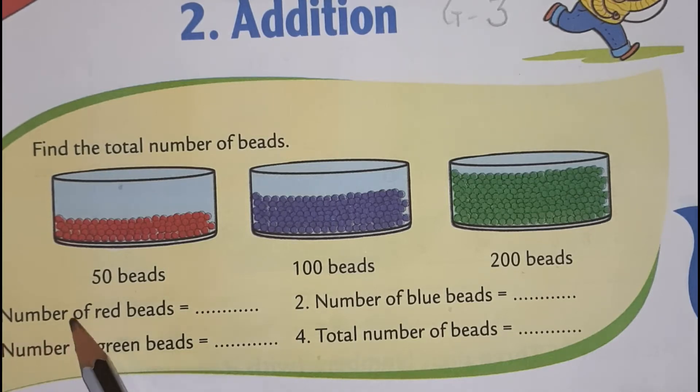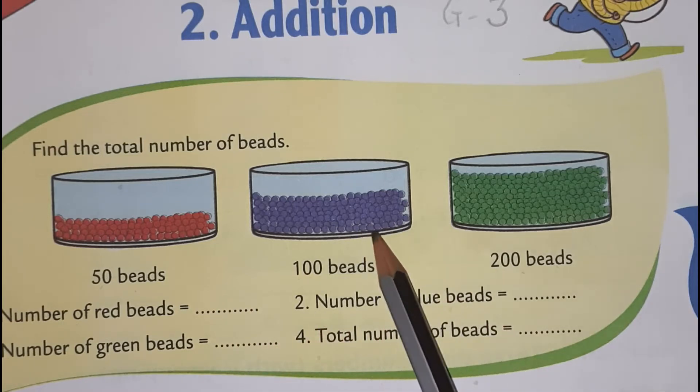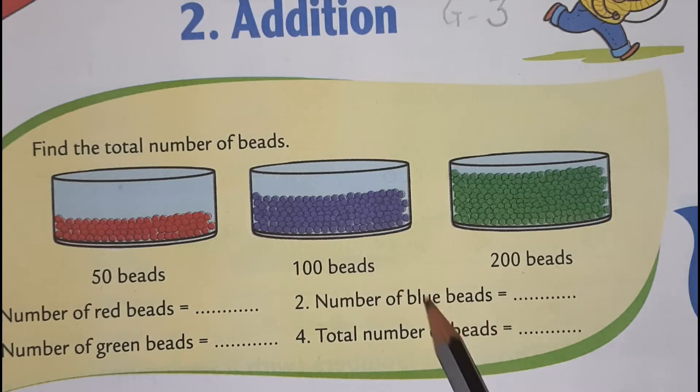Now, question number 1, number of red beads. What is the number of red beads? So, we will write here 50. Number of blue beads. I was telling purple, but in the books it is written blue. So, blue beads are 100. We have to write here 100.